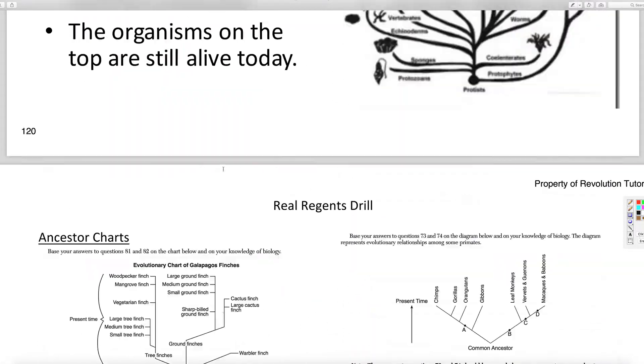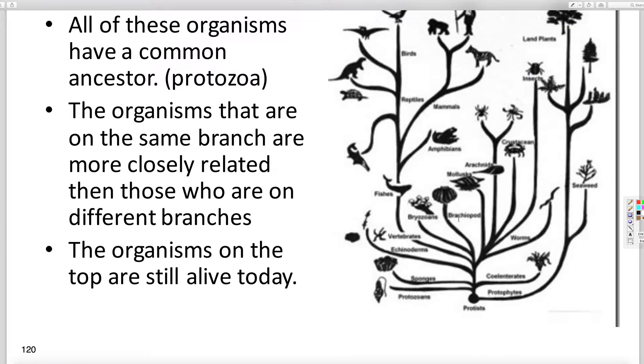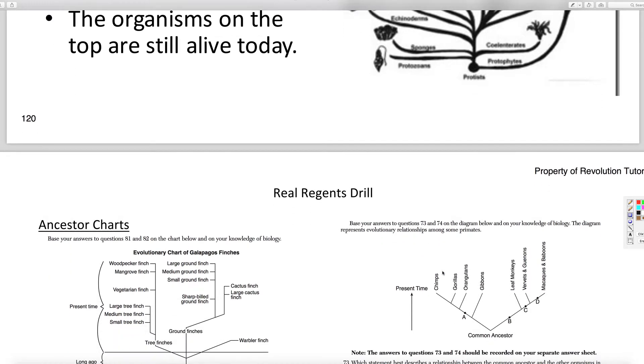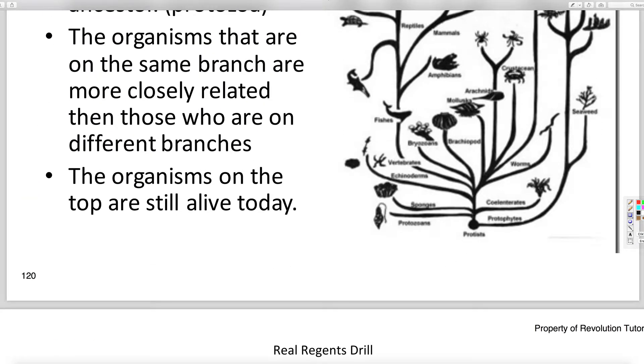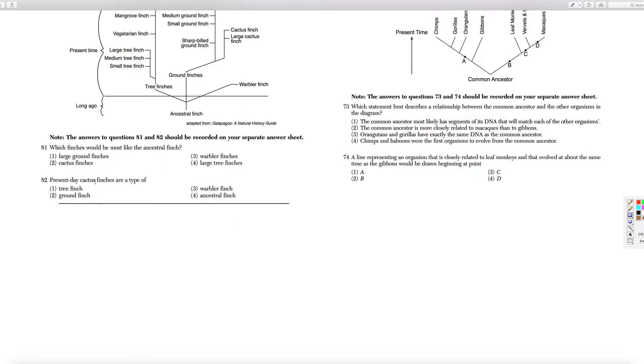Extinction is when a species disappears. Common ancestor. So I always explain this as, this is the grandpa and these are his kids. Some of his kids don't have kids. They're done. Their seed has died out. Whereas some of them continue to have kids. Now, the ones that are most closely related is always the father to the child. They'll have the closest relationship rather than the grandfather. So which finch would be the ancestral finch? Would be most like it. The warbler finch. Even though the warbler finch died out, he still was like the ancestral finch. It was his kid.